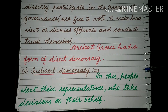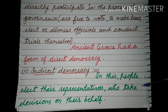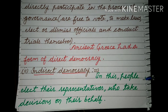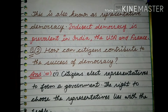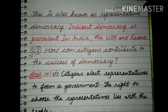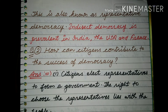The second kind is indirect democracy. In indirect democracy, people elect their representatives who take decisions on their behalf. This is also known as representative democracy. Indirect democracy is prevalent in India, the USA, and France.